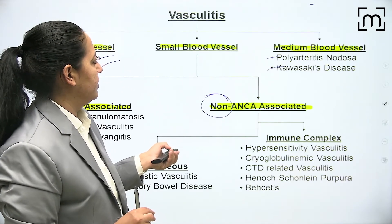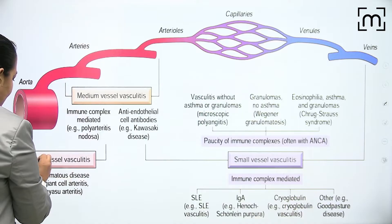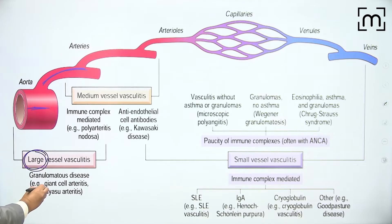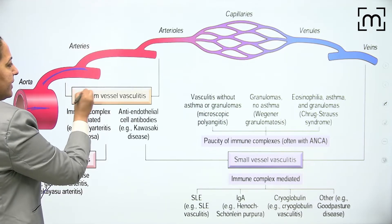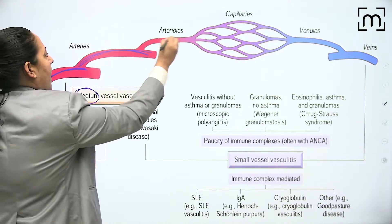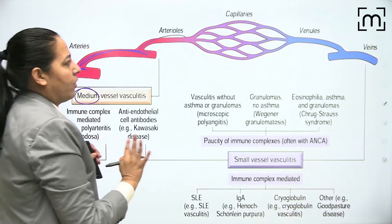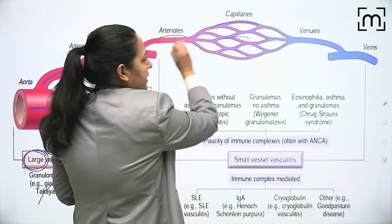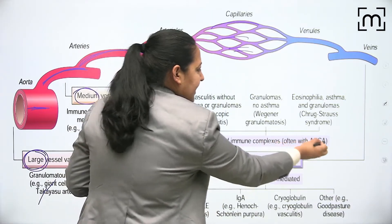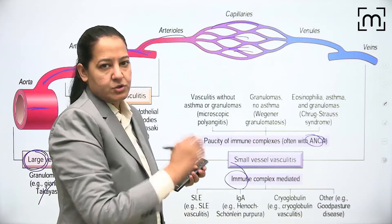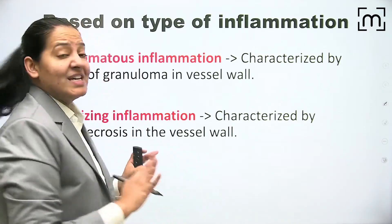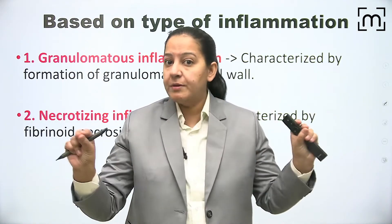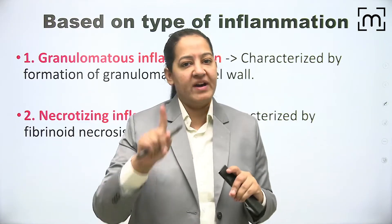In large vessel vasculitis, either the aorta or large arteries are involved - that is giant cell arteritis and Takayasu. In medium vessel, small arteries and arterioles are involved. In small vessel, basically capillaries are involved. Coming on the second type of classification - type of inflammation - there are two types: granulomatous or necrotizing.